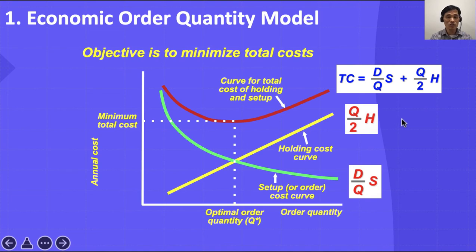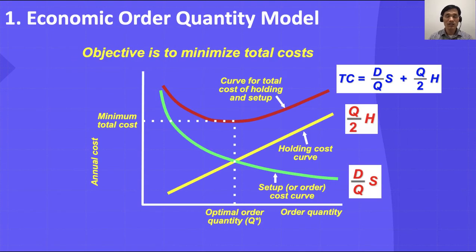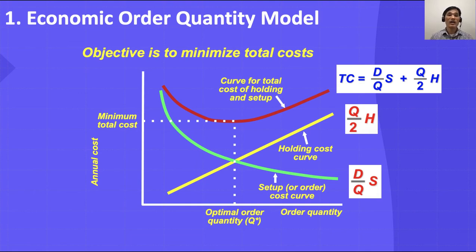Setup cost is defined as D over Q times S, where D is annual demand, S is setup cost, and Q is the order quantity. Q over 2 is the average quantity multiplied by the handling cost per unit.